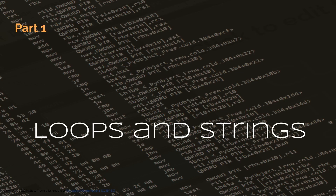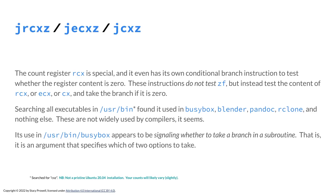Let's talk about loops and strings. At the top, you see some highly pronounceable mnemonics. The count register RCX is special, and it even has its own conditional branch instructions to test whether the register content is zero. Given that, if you look back at those commands, maybe they don't look so foreign. Jump if RCX zero, jump if ECX zero, jump if CX zero. These instructions do not test the zero flag — they straight up test the contents of the register. RCX is treated differently from other registers.